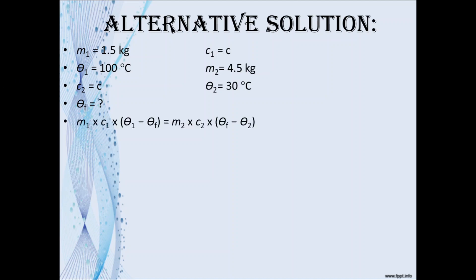So our formula would remain the same. Now when we substitute, it would be 1.5 times c times all the rest, and so on. Since it is the same c on both sides of the equation, they would cancel out. You can divide both sides by c since it is the same. Then you would be left with much smaller numbers: only 1.5 times (100 - θf) and on the other side 4.5 times (θf - 30).